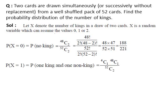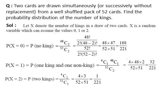P(x=1) is the probability of one king and one non-king card. As two cards are drawn simultaneously, P(x=1) = 4C1 × 48C1 divided by 52C2. Simplifying, we get 32 by 221. P(x=2) is the probability of 2 kings, which equals 4C2 divided by 52C2. Solving this, we get 1 by 221.